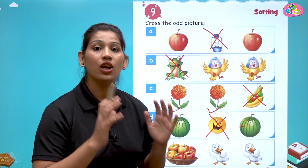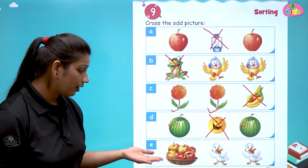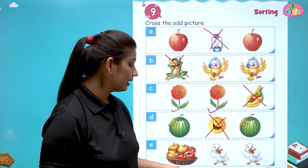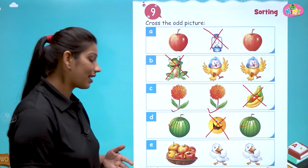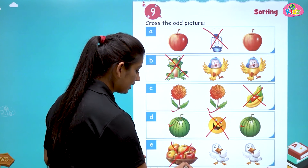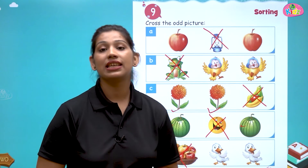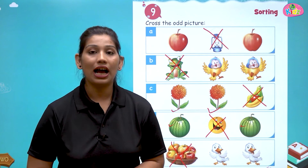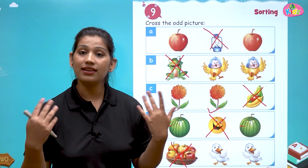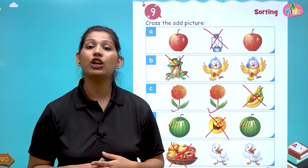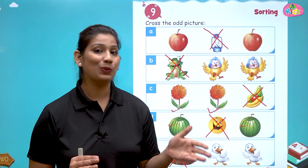Sorting means keeping the odd one out. Here we have a basket of apples, duck, duck. It is quite easy to understand that the basket of apples is odd. Sorting means keeping the odd one out. In all of these, we have three things — two things are the same and one thing is different. They are odd, so we keep them out. Odd one out — this is called sorting.